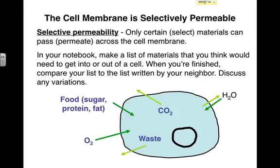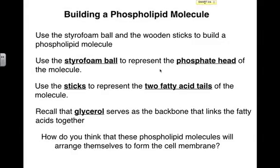Here's a very generic list that I came up with. Molecules that would need to be able to get into the cell would include most biological molecules: sugars, proteins, fats, and nucleic acids. O₂ is going to need to be able to get in because all cells perform cellular respiration. Waste is going to have to get out — one form of waste is carbon dioxide. Water is actually going to need to be able to get into the cell and get out of the cell.